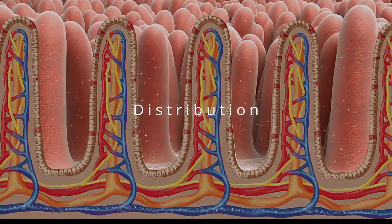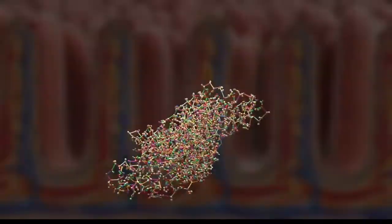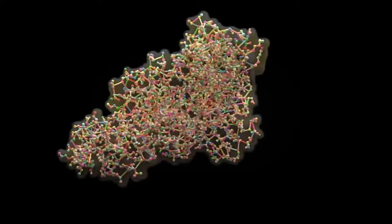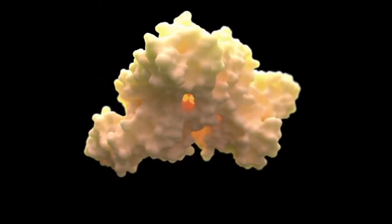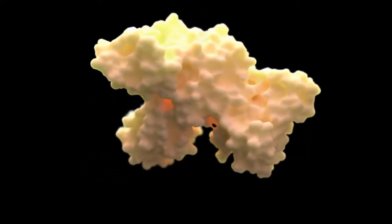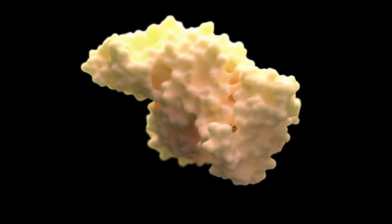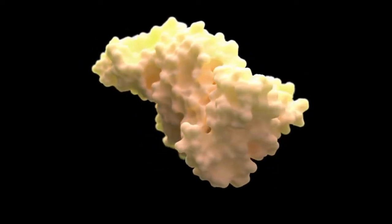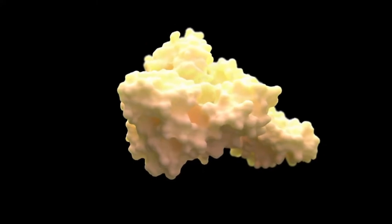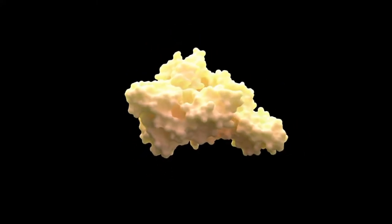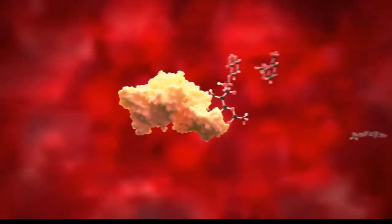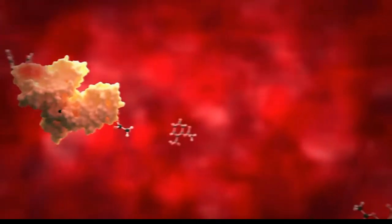Distribution. Blood plasma contains complex molecules called albumin. Albumin is a protein made by the liver which transports nutrients around the body. Albumin also binds to drugs that enter the bloodstream. Here you can see some of the aspirin molecules binding to the albumin.